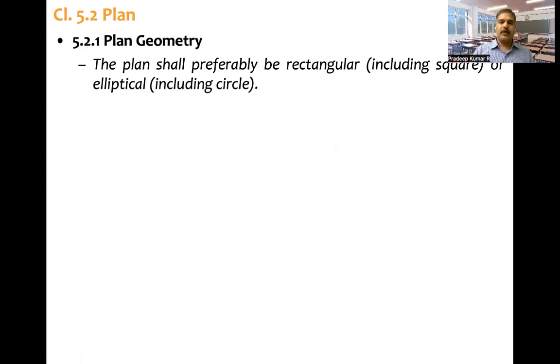Typically it looks like this. This is a three-dimensional figure, rectangular, and also it can be square. This is a three-dimensional figure of elliptical. Depending on the major axis, minor axis, if they are equal, that becomes circle.